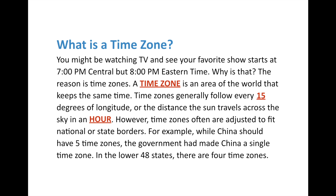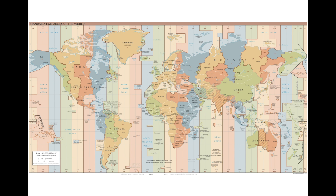Now, time zones aren't nicely divided every 15 degrees on land. We have nautical time zones which do go every 15 degrees, but on land we kind of adjust them. They're mostly adjusted to fit national and state borders, and you end up with some weird things. For example, China should have five time zones but they only actually have one, based on the capital Beijing. In the United States, in the lower 48, we have four time zones.